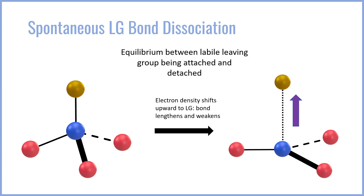There is an equilibrium that happens in certain compounds between the so-called labile leaving group — that is to say a leaving group that can fall off easily — between it being attached and detached. In part of the equilibrium, the leaving group is detached to form a leaving group anion and a carbocation intermediate, while most of the time it is attached. However, that small percentage of the time where the leaving group is detached is what creates the carbocation which is active towards the SN1 reaction.